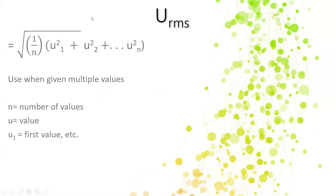When talking about root mean square speed, we were given two equations. The first equation is what you'd use if you were given multiple values — for example, if the question gave you five runners each with speeds of 10, 12, 13 miles per hour, and so on. You take those values, square each of them, add them all up, divide by how many values you have (which is N), and then take the square root of that. So: square the individual values, add them together, divide by how many values you have — that's the first equation.